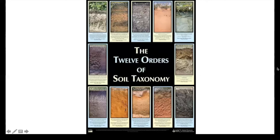Oxisols are soils that are in the tropical or subtropical regions of the world. They dominate in iron oxides and quartz. They're pretty highly weathered, so they have low fertility, and they're found over 8% of the world's glacier-free land surface.